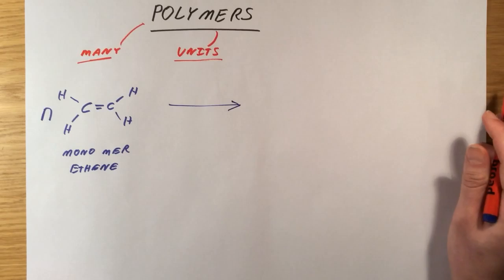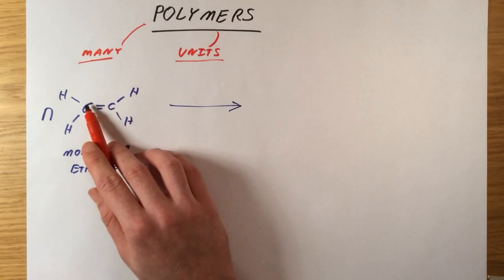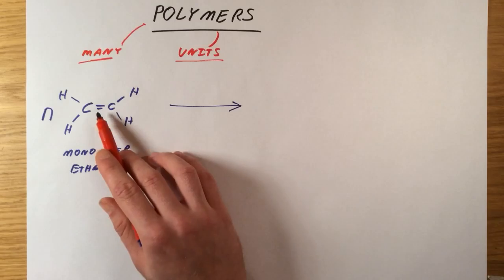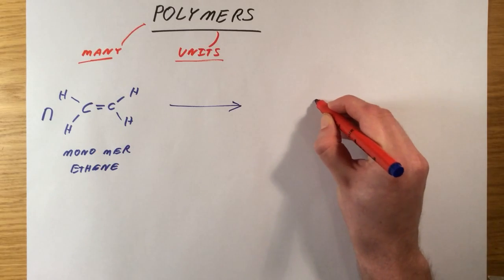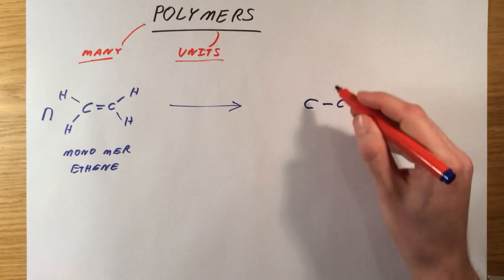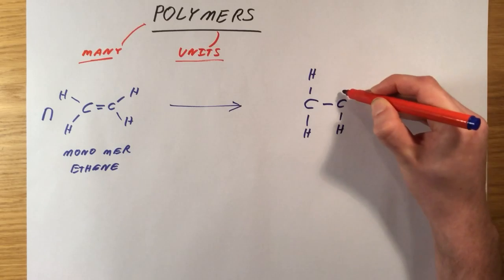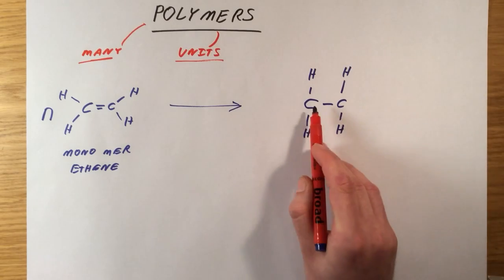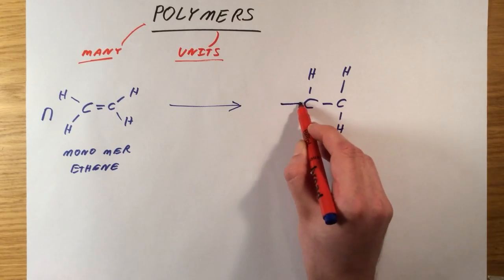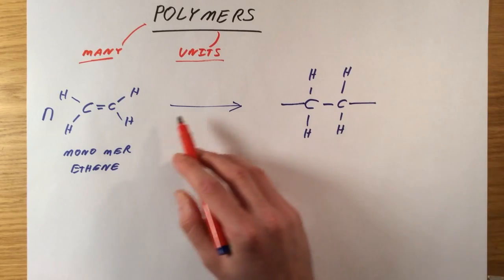When I put them under high pressure and heat them up with a catalyst, what I actually do is break this double bond. Each carbon atom can form a new single bond to the next monomer molecule along. The double bond is breaking, I'm still going to have my four hydrogen atoms about these carbon atoms. This carbon atom here can form a new bond to the left and can join onto a new chain. The carbon atom on the right can form a bond to another chain.